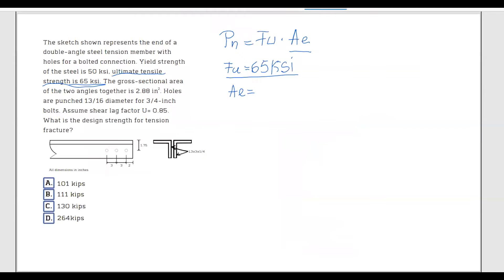If we go back to our problem here and we write down U times AN, where AN is the net area. So net area, of course, equals the gross area minus the area of holes. So let's see here.